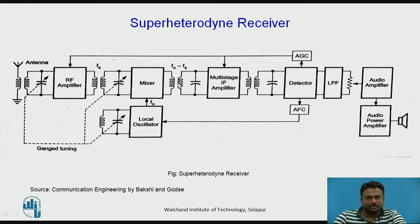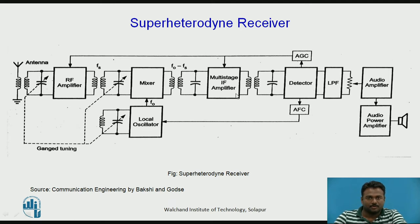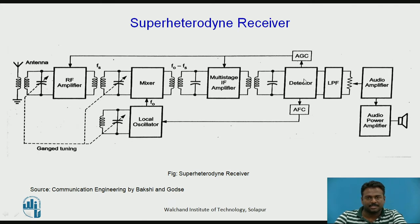The intermediate frequency carries the same modulation as the original received frequency, and the characteristics of the IF amplifier are independent of the received signal frequency. The intermediate frequency signal generated by the mixer is fed to the multi-stage IF amplifier, which provides sufficient gain. The amplified IF signal is then fed to the detector circuit, which recovers the original signal. The recovered signal passes to the audio amplifier and power amplifier, which boost it sufficiently to drive the loudspeaker.